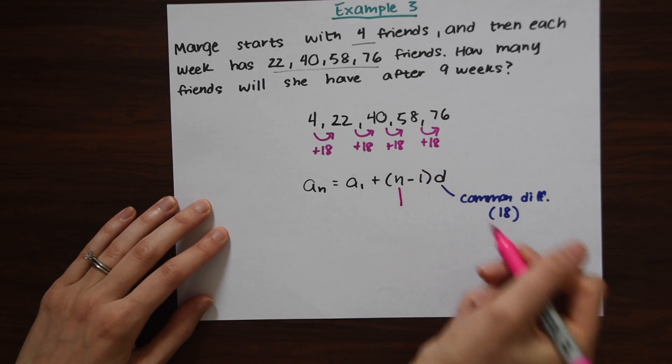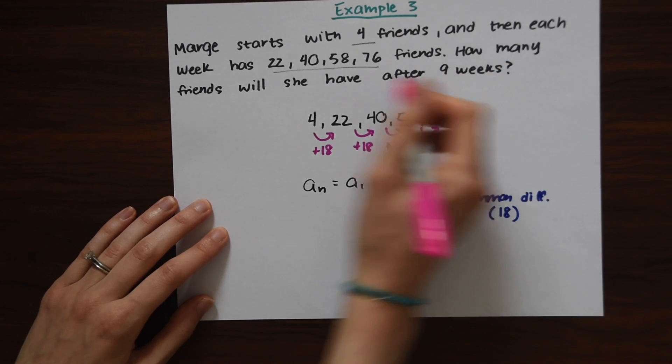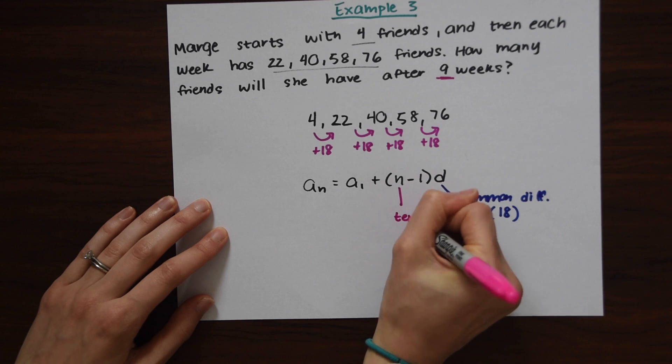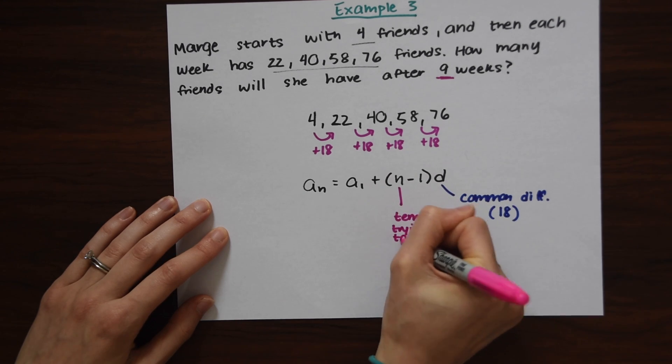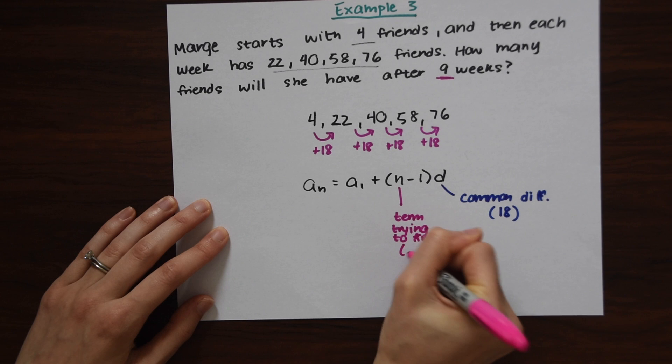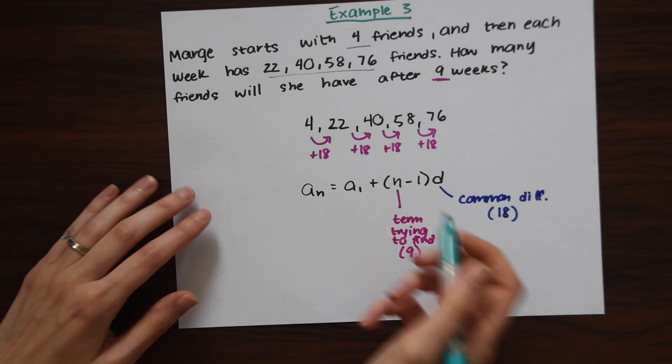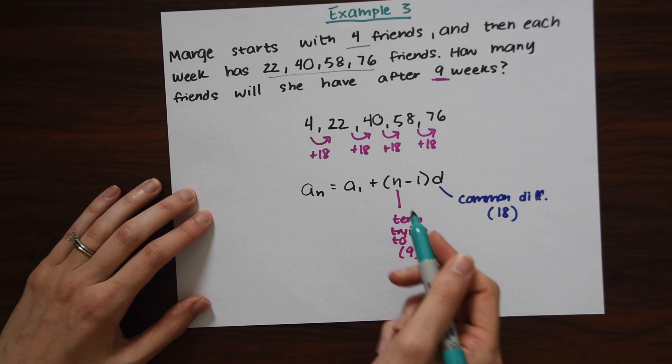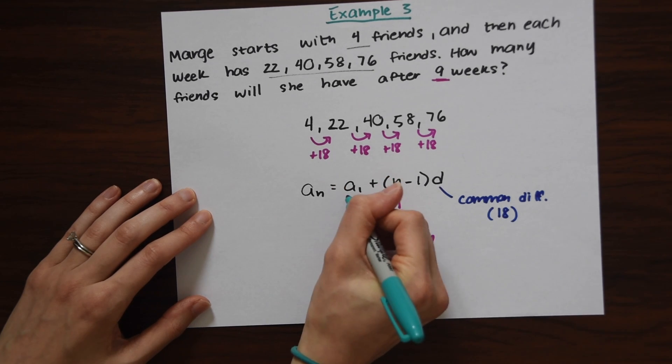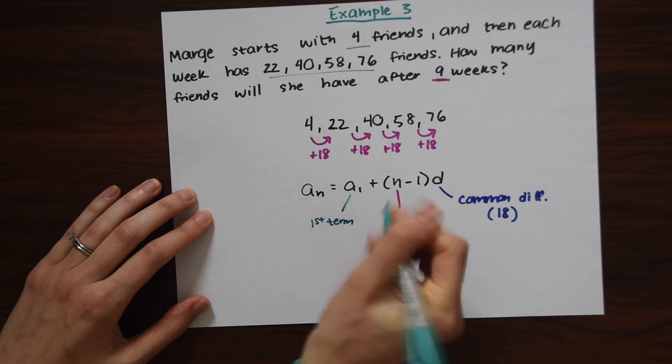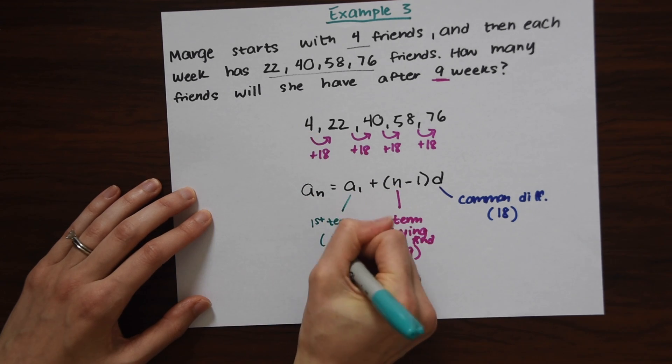N is the term you're trying to find, which is 9. They want to know after 9 weeks. So term trying to find, which in this case is 9. And the last part of our formula we need to fill in is the first term. So the first term of the sequence, which is given to us, which is just 4.